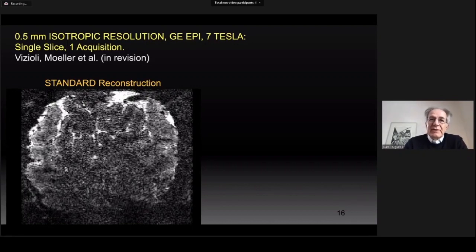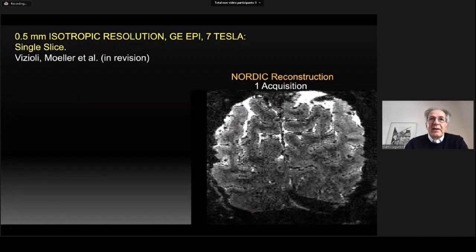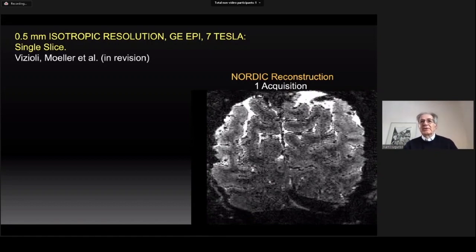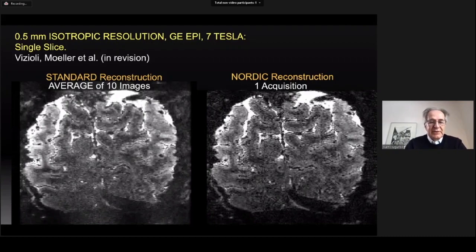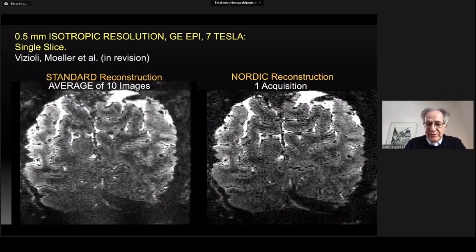this single image reveals that SNR is too poor to provide meaningful functional maps. NORDIC improves it tremendously, as shown here. We can evaluate the improvements by comparing the NORDIC reconstructed single image with the standard reconstructed image of the slice with multiple acquisitions added together. Showing 10 averages of the standard images, these look very similar — so we are achieving approximately the equivalent of a 10-image standard acquisition in the single NORDIC image, without image blurring.